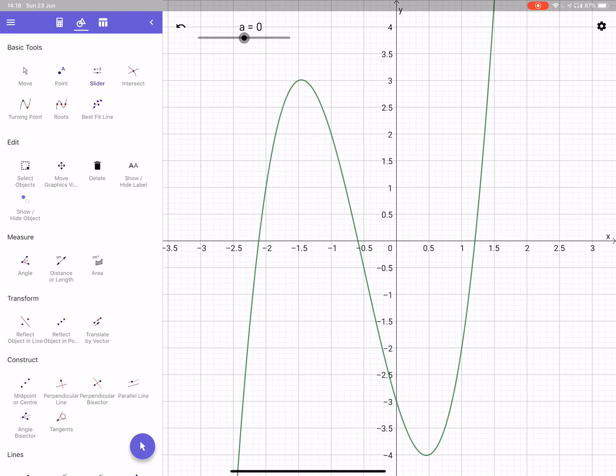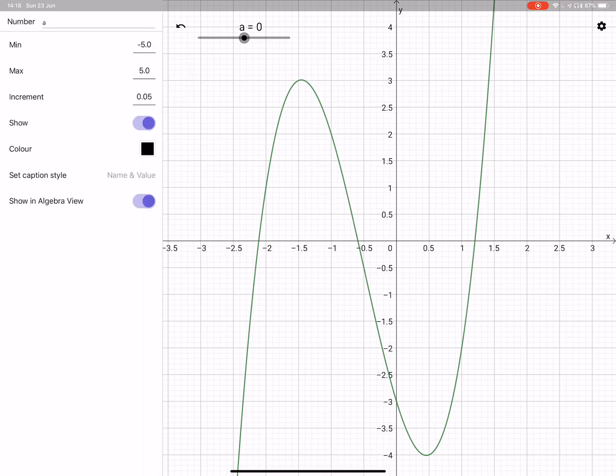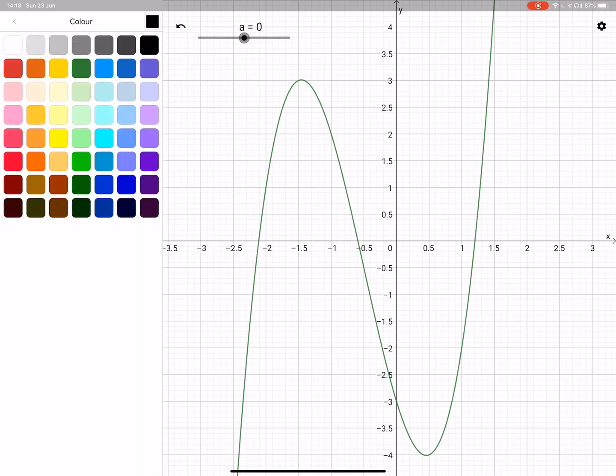I want to go from minus 5 to 5, step 0.05 is okay, press okay. Now I can move it around to where I want it to be. And now if I go back to the calculator it's there. If I press the three dots and press the settings I could perhaps change the color if I wanted to.